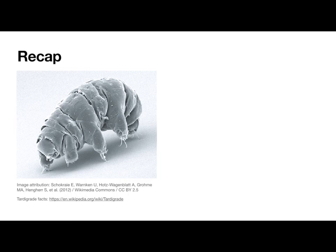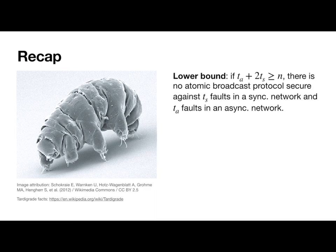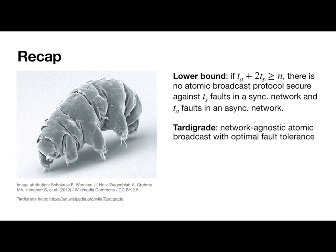So to review, we offer three main contributions: a lower bound showing that this notion of network agnostic security is impossible if TA plus 2 TS is greater than or equal to N, and two constructions, one with optimal TA TS and one with better communication complexity. And like our friend the tardigrade, our constructions are able to survive in whatever environment they end up. That concludes my talk. Thank you for watching.